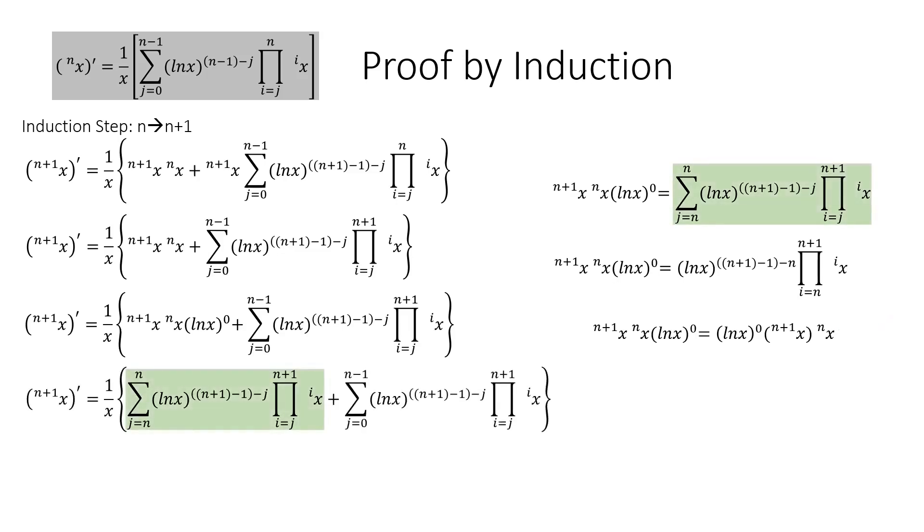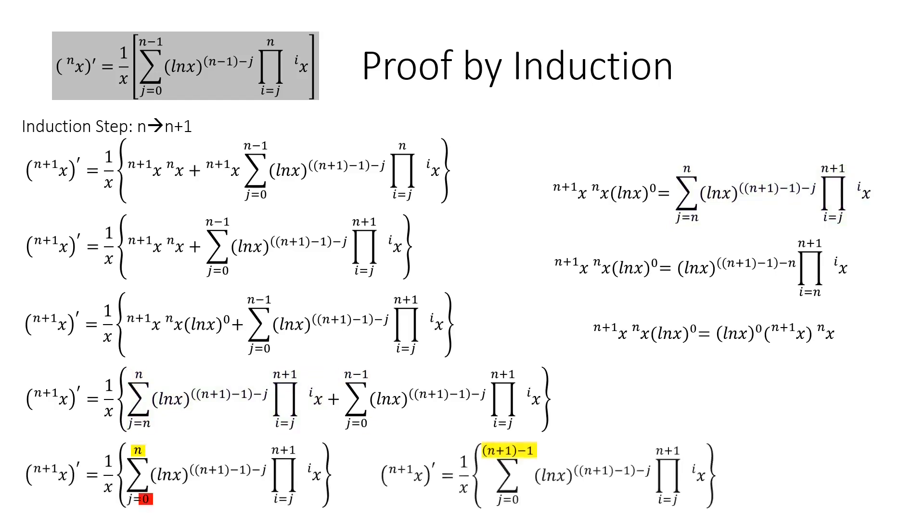And notice that the summands are the same except for limits, and can be combined into one sum, but n equals n plus 1 minus 1. And finally, this formula is our conjecture, where every n is replaced by n plus 1, which completes the induction.